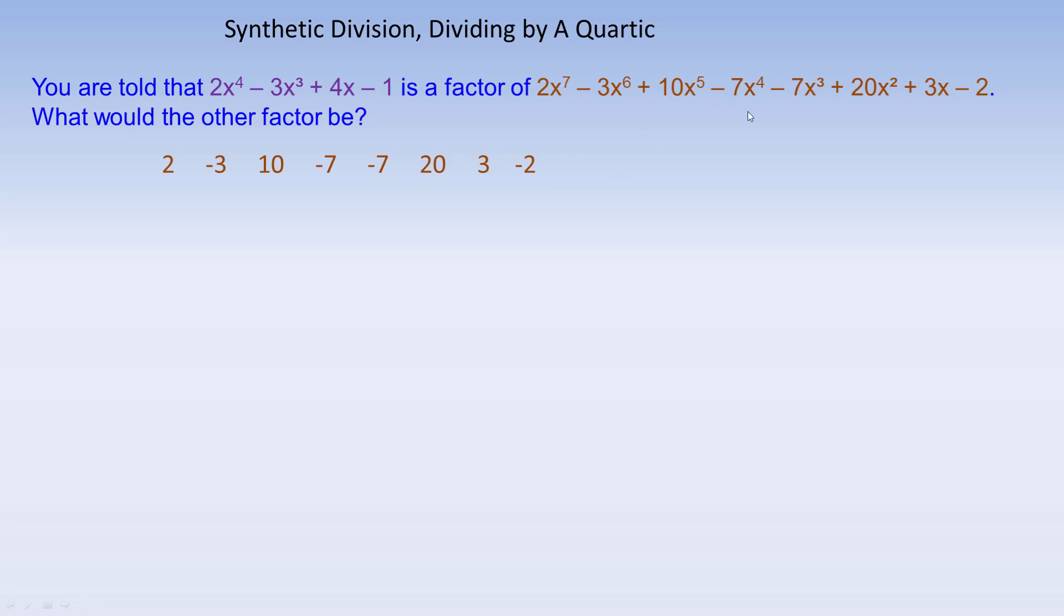Remember if you're ever doing this, and there's a term, I'll say this kind of in quotation marks, missing, like let's say it went from x to the 5th to x cubed. So let's say there was no x to the 4th term. So you would make sure that you would put a 0 in, like if that term didn't exist, we put a 0 here. Okay, because it's like a placeholder, okay, so this means the constant term linear quadratic cubic to the power of 4, 5, 6, and 7.